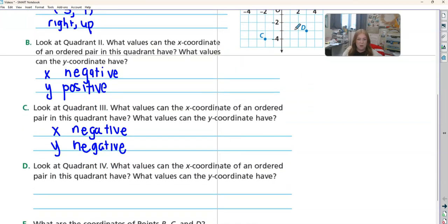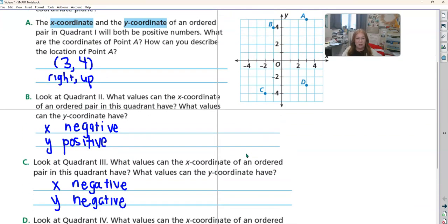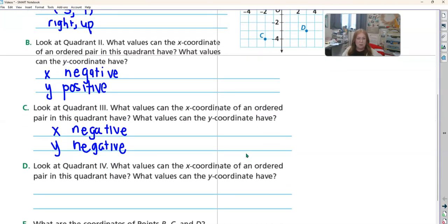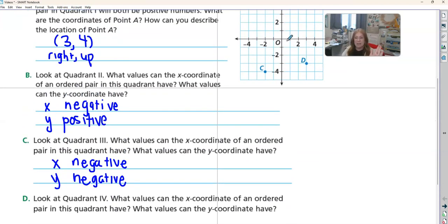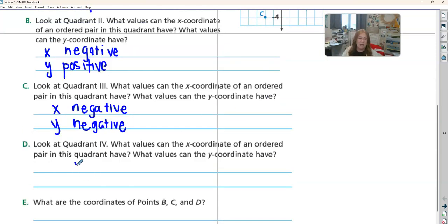Okay, now quadrant 4. What are the values quadrant 4 can have? So quadrant 4 is here where d is. We have to go over to the right, which is positive. So x is going to be positive. And then we have to go down into the negatives. So x is positive and y is negative to get to quadrant 4.